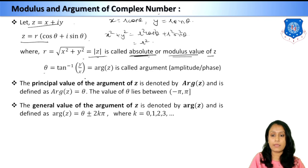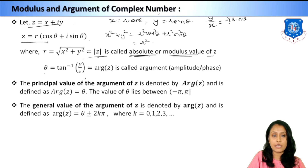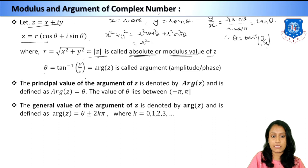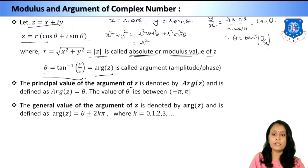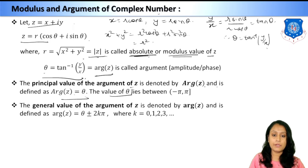θ = tan⁻¹(y/x), obtained by dividing y/x = (r sin θ)/(r cos θ) = tan θ, so θ = tan⁻¹(y/x). This is the argument of z. The principal value of the argument of z, denoted Arg(z), is defined as θ = tan⁻¹(y/x) where θ lies in the interval (−π, π].